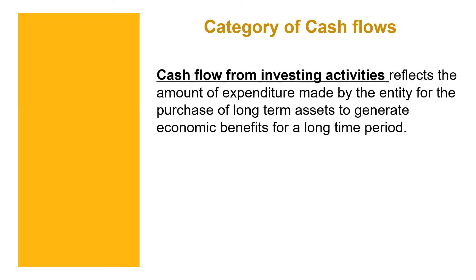Cash flow from investing activities reflects the amount of expenditure made by the entity for the purchase of long-term assets to generate economic benefits over a long period. This includes not only purchases but also disposals. When you purchase long-term assets such as land, machines, or buildings, the payment is classified as a cash outflow from investing activities. When you sell them, since they are long-term assets, the proceeds are classified as a cash inflow from investing activities.